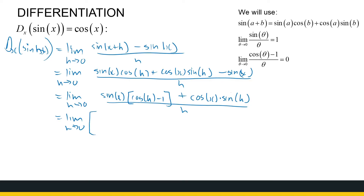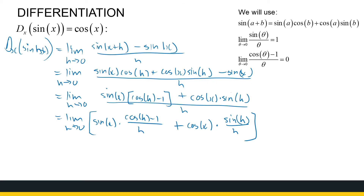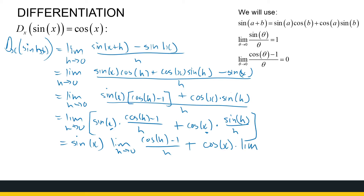We break this into two fractions. That's the limit as h approaches zero of sine x times cosine h minus one over h, plus cosine x times sine h over h. The beauty of limits is that the x terms are constants, so this becomes sine x times the limit as h approaches zero of cosine h minus one over h, plus cosine x times the limit as h approaches zero of sine h over h.